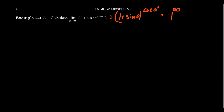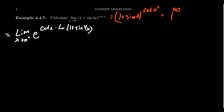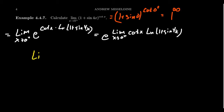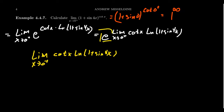We need to compute the limit as x approaches 0 from the right of e to the cotangent(x) times the natural log of (1 + sin(4x)). Since e is continuous, we can pull out the exponential and focus on the limit of cotangent(x) times the natural log of (1 + sin(4x)). Some people discard the e temporarily and just focus on that inner limit, remembering to apply the e at the very end — but be careful, forgetting the e is a very common mistake.